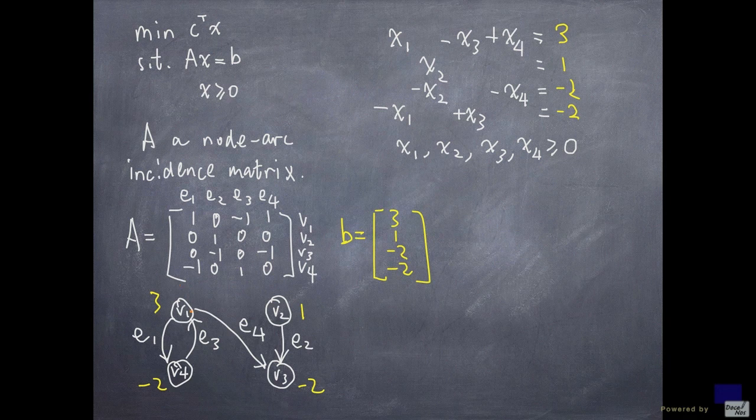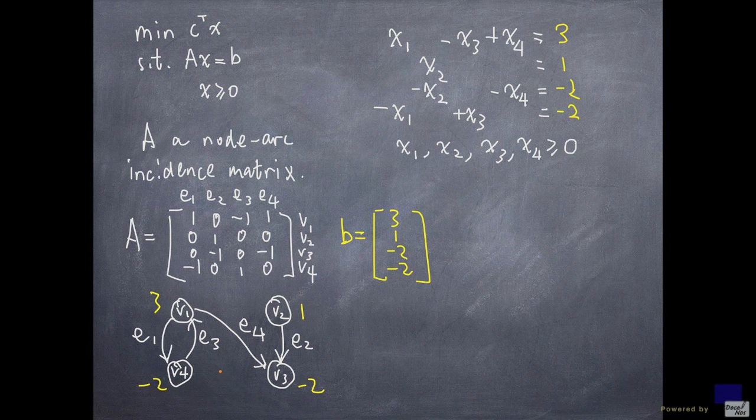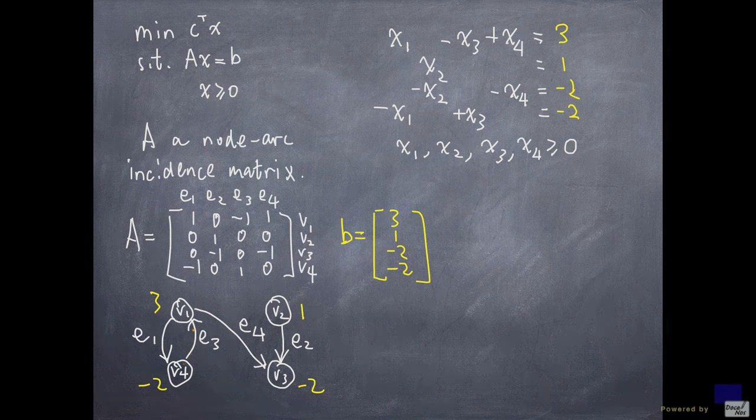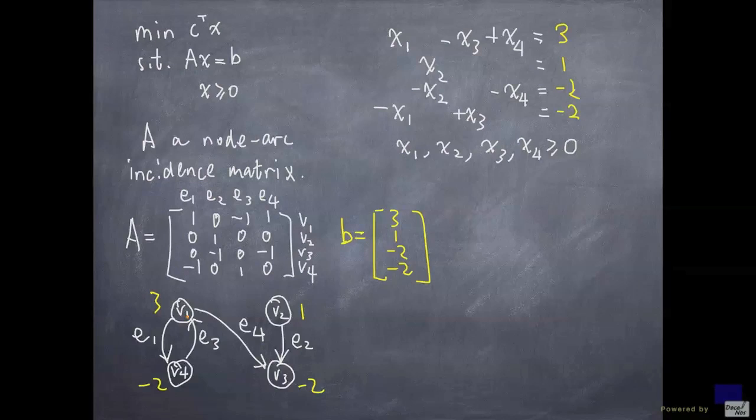Now I want you to concentrate on node v1. There are two arcs coming out of v1, e1 and e4. And the coefficients of x1 and x4 are both positive. Whereas the arc coming into v1, which is e3, the coefficient of x3 is negative. Remember that each xi corresponds to the arc ei.